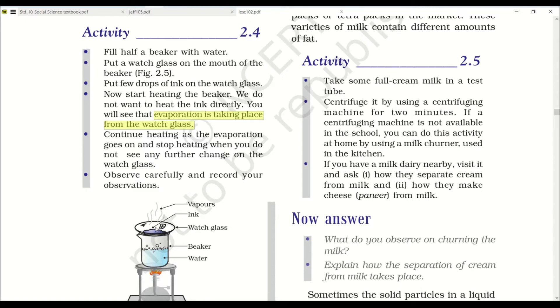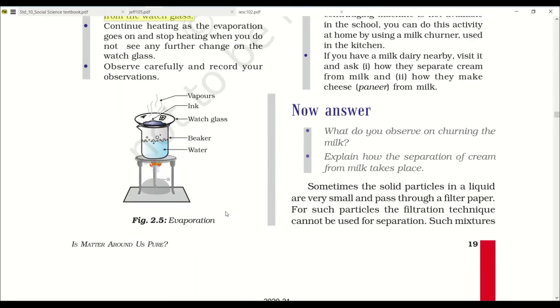So here you can see the water that is boiling in the beaker separates the ink from the water that is mixed in the ink. The water in the ink evaporates due to the heating of this watch glass and the leftover is the powdered ink. Continue heating as the evaporation goes on and stop heating when you do not see any further change on the watch glass. Observe carefully and record your observation.